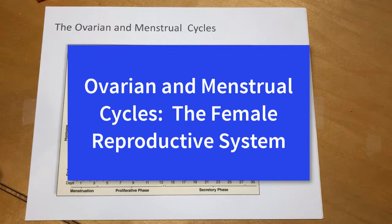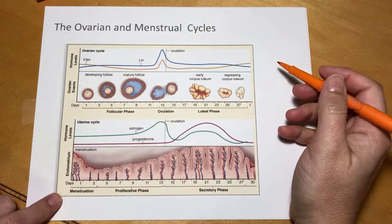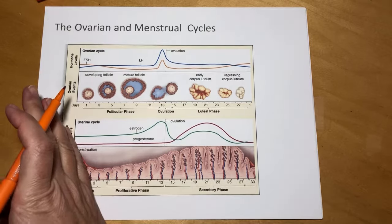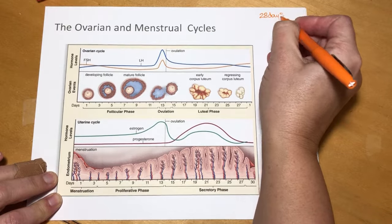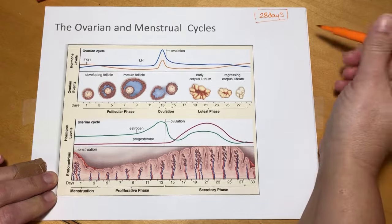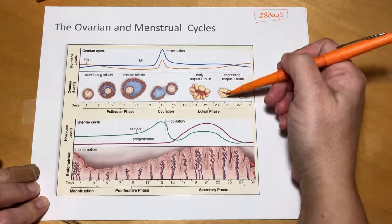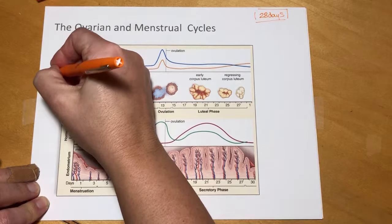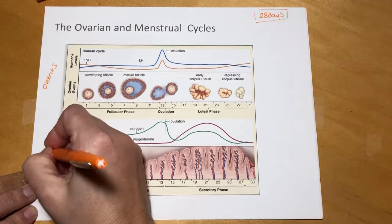Hi everybody, welcome back. Today we're going to be talking about the ovarian and menstrual cycles in women. The most important thing to recognize is that if you look at a picture like this, showing the activity of the ovaries and the uterus over time, the cycle is about 28 days long on average. Up at the top are events happening in the ovaries; down at the bottom are events happening in the uterus.